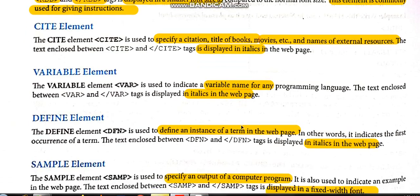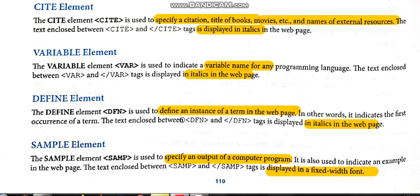Next is the define element. The define element is used to define an instance of a term in the web page. If you are using any term in the web page, it indicates the first occurrence of that term. The term you are defining can be written using the tag dfn. It is also a container element with opening tag dfn and closing tag backslash dfn. The word written within those tags will be displayed in italics in the web page.